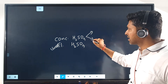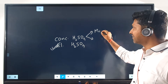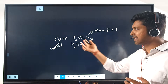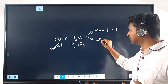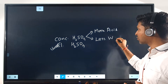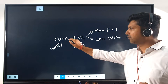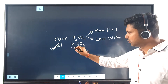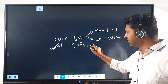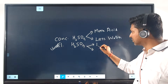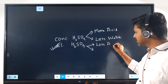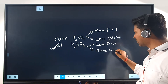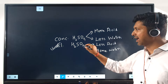Concentrated H2SO4 obviously has more acid — that's why it's more concentrated — and less water. So more acid and less water is the combination in concentrated H2SO4. In dilute H2SO4, it is the opposite: less acid and more water.